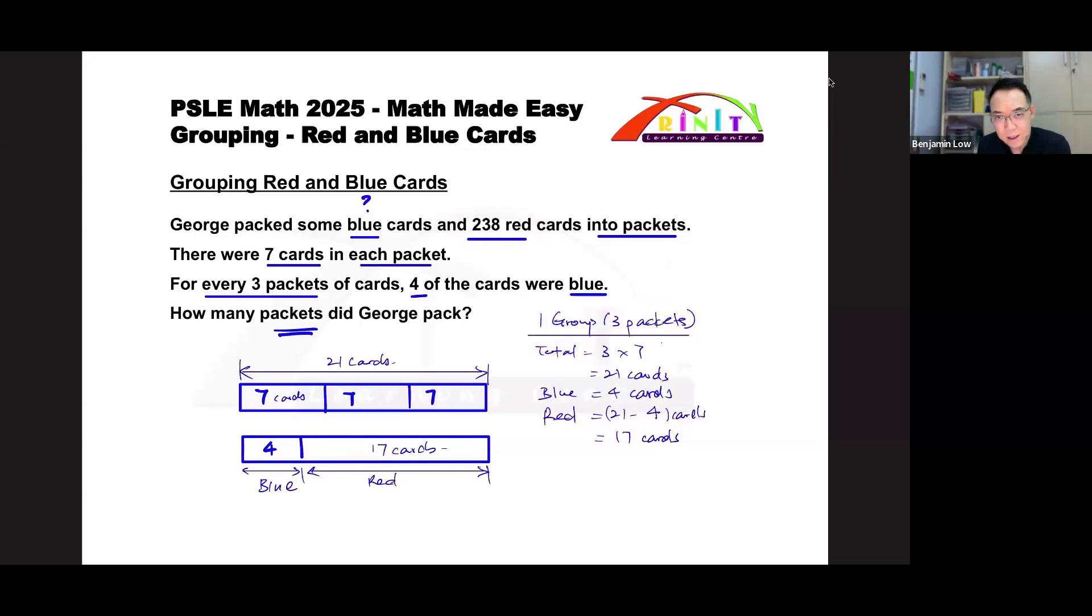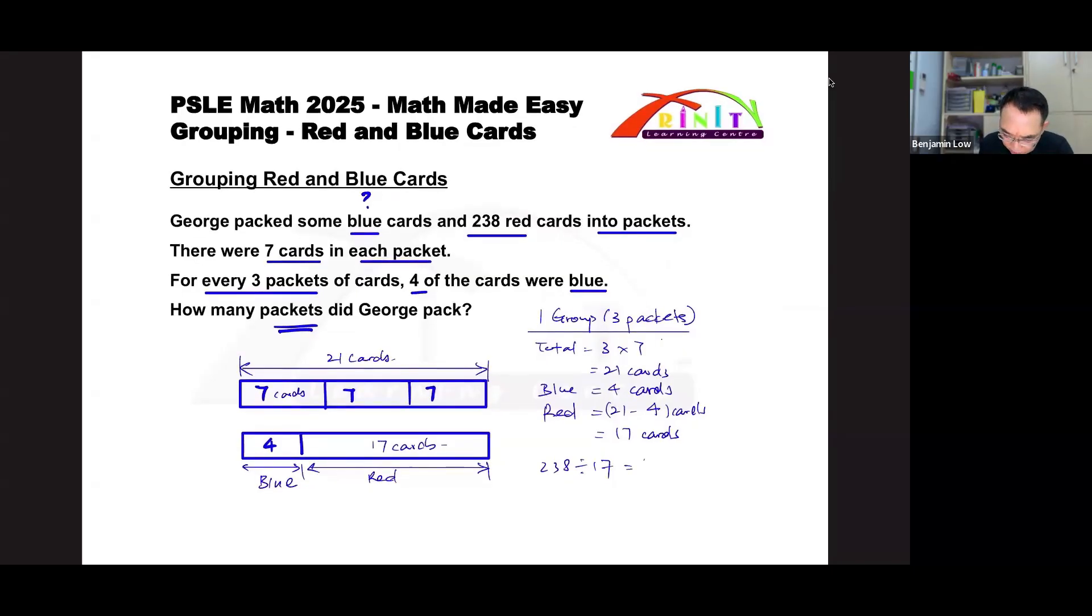The answer is take 238 and then you divide this by 17 to find the number of groups. So you take 238 and divide this by 17. This should give you a whole number, otherwise you probably did something wrong already. This gives me 14, so there are 14 groups.